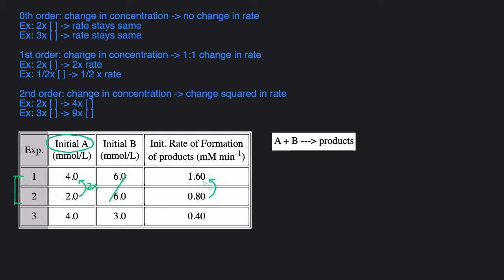The rate is going from 0.8 to 1.6, so that's also doubling. A doubling of concentration and a doubling of rate means it's first order because it's a one-to-one change. Another way to think about it: the concentration change was 2, raised to the x power equals the change in rate, which is 2. So x, the order of A, has to be 1. A is first order.